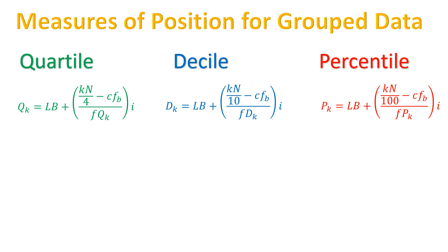When we say grouped data, these are scores or data that are placed or clustered in the so-called frequency distribution table. The frequency distribution table varies depending on what data you need. In this case, there are a couple of pieces of information that must be present: LB, N, CF, F, and I.